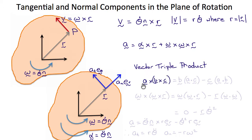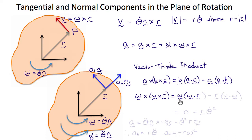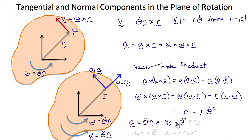Recall from vector analysis the vector triple product: a cross (b cross c) equals b times (a dot c) minus c times (a dot b). In this case, a and b are omega, so we get that omega cross (omega cross r) equals omega times (omega dot r) minus r times (omega dot omega). Since omega and r are orthogonal to each other, this dot product is zero. Omega dot omega is the square of the magnitude of the angular velocity, which is θ-dot squared. So a equals θ double dot (n cross r) e_r minus θ-dot squared times r times e_r. Therefore the tangential component of the acceleration is r θ double dot, because the tangent direction is the direction of n cross e_r, which is perpendicular to the plane of the normal and r.